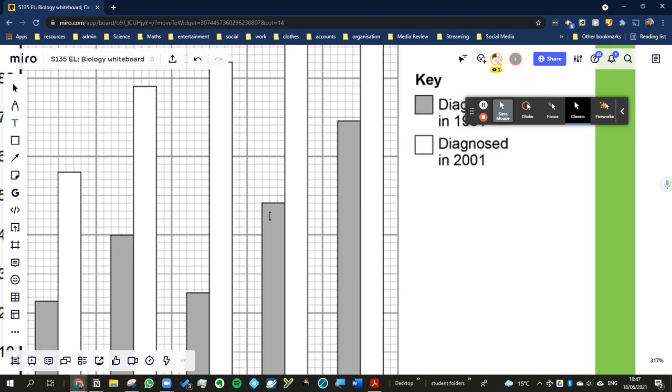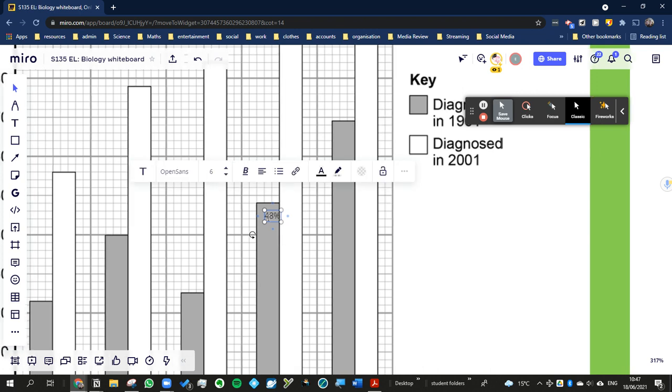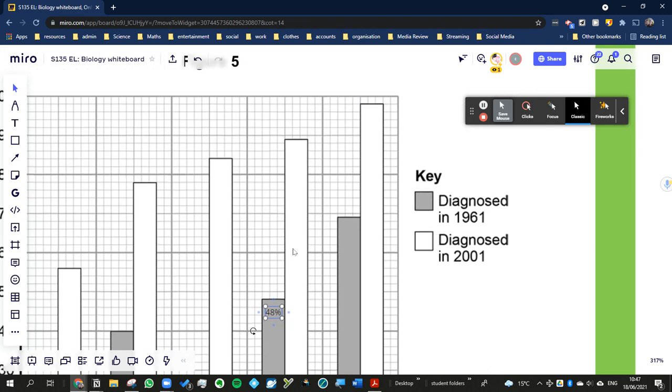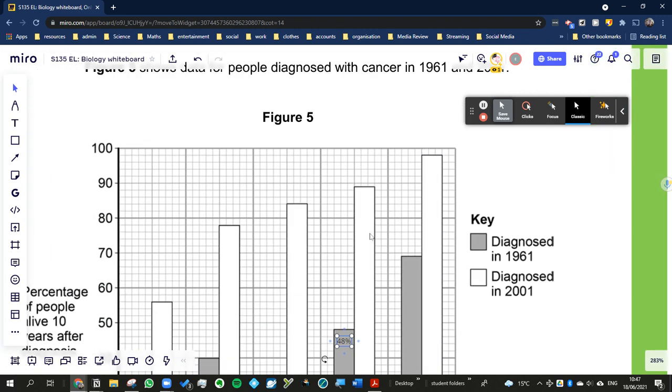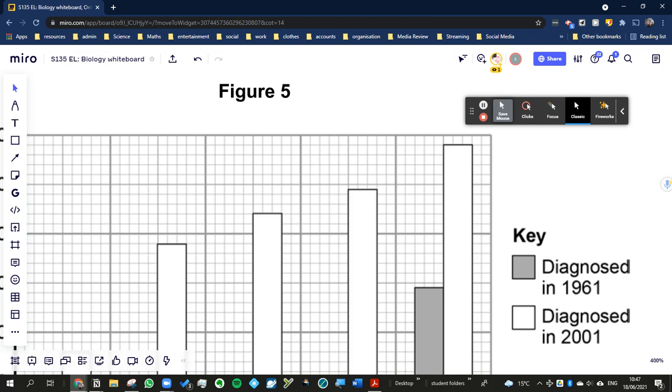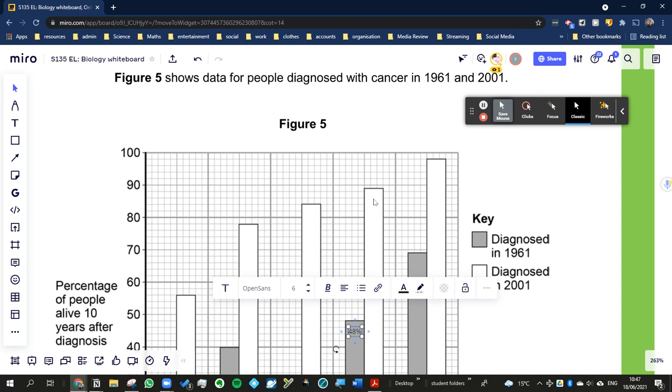Let's just make a note of that on this bar here, so 48%. Okay, so we've got—that's the chance of you surviving skin cancer back in 1961 after 10 years. In 2001, it's actually between these two divisions. Each division is 2, so half a division must be 1.